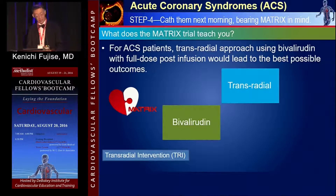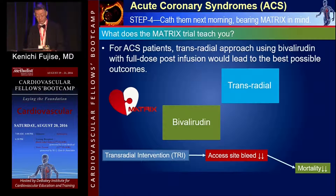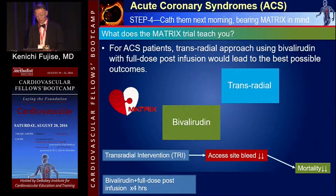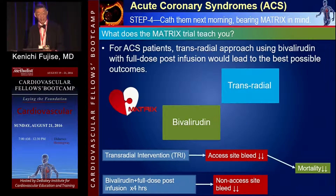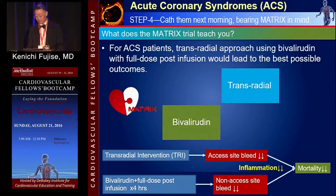Mechanistically, transradial intervention decreases access site bleeding rate, thus decreasing mortality, because bleeding causes inflammation and inflammation causes worse outcomes. Bivalirudin plus full-dose post-infusion decreases non-access site bleeding compared with heparin with GPI, and therefore also decreases mortality. Remember, bleeding is a bad thing and contributes negatively to outcomes.